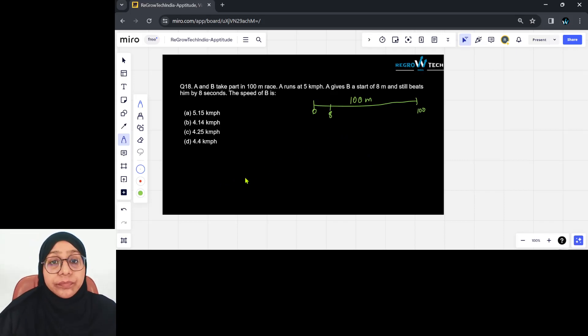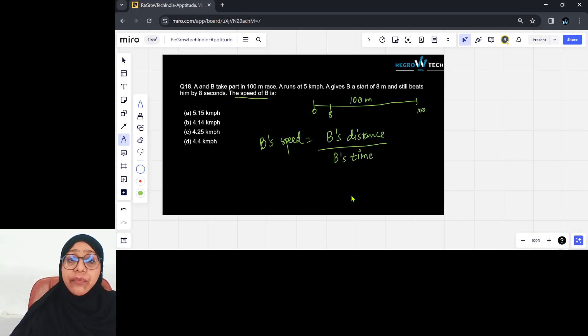Now we need to find B's speed. B's speed is nothing but B's distance divided by B's time. This is what we need to calculate. Now first of all, how much distance is B covering? From 8 to 100, so B is covering a distance of 92. Because A is giving a start to B of 8 meters, so B is only covering 92 meters.